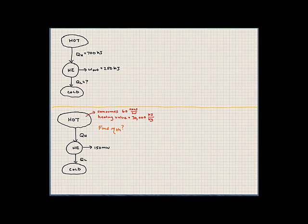An example of that is given here in this first problem where we have a hot temperature source providing our heat engine with 700 kilojoules of heat. Our output work is 250 kilojoules and we have to reject some amount of heat for this process to be possible.